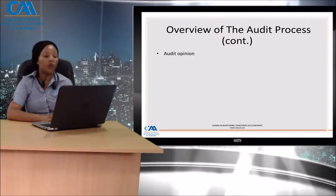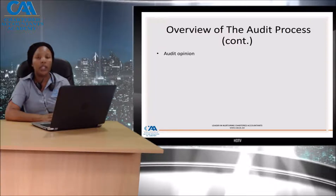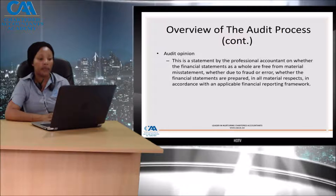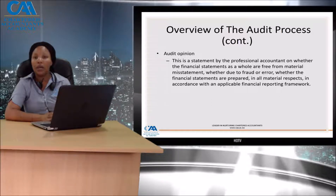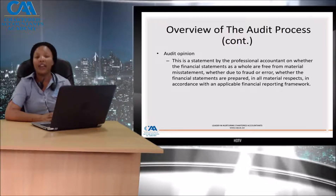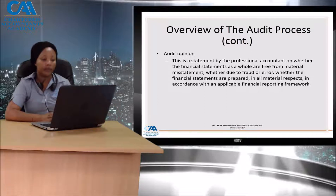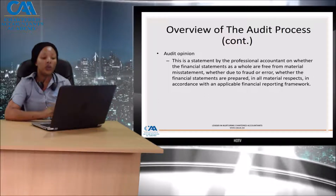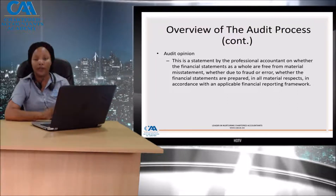As part of your conclusion, the audit opinion will be key. You will need to express an audit opinion. This is a statement issued by you as the auditor — a professional accountant — to say whether or not the financial statements as a whole are free from material misstatements due to fraud or error, or whether the financial statements have been prepared in all material respects in accordance with an applicable financial reporting framework. For the purposes of your CTA, your framework will be IFRS, and so the ISAs are there to audit the IFRS.